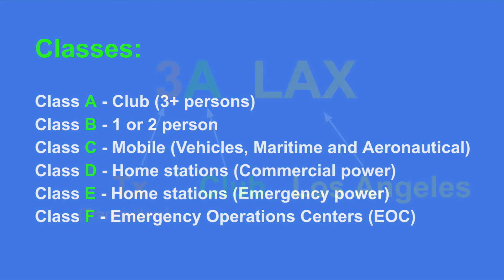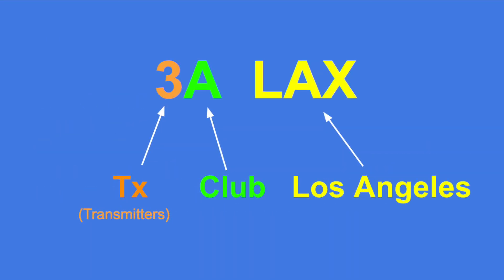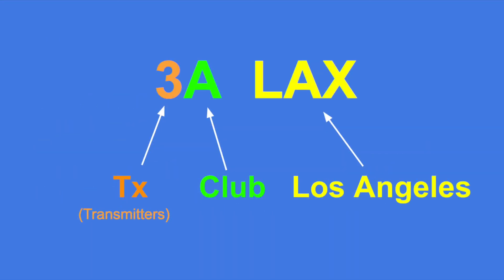Let's see an example. In this example we see 3A LAX. That means that this station operates three transmitters, it is a club station, and it is located in the Los Angeles area.